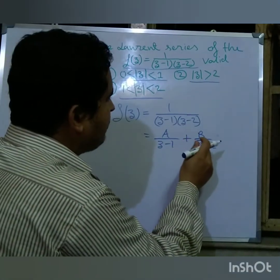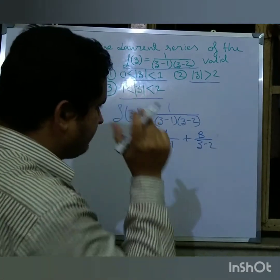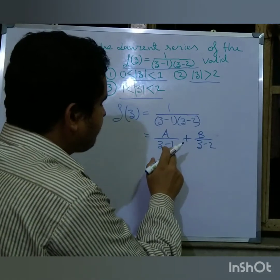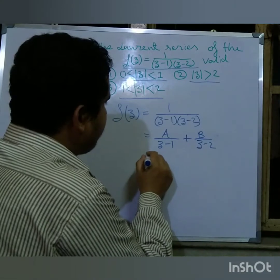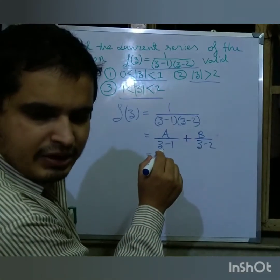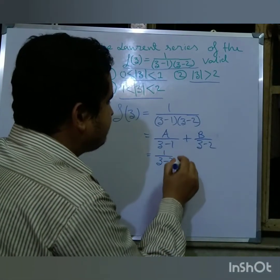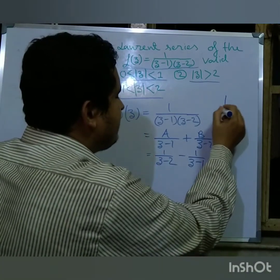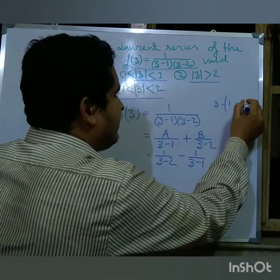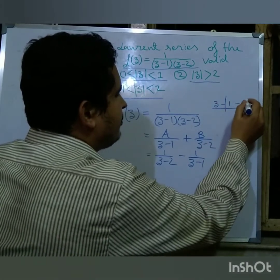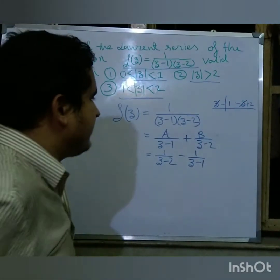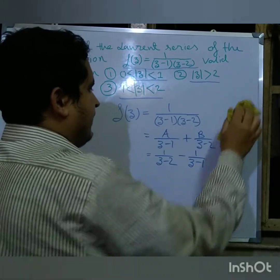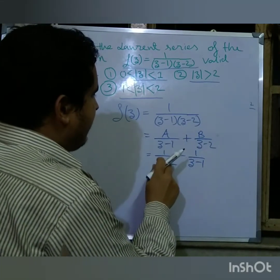To find A, put z equals 1, and to find B, put z equals 2 into the partial fraction expression. Substituting z equals 2 gives (z minus 1) evaluated at z equals 2, so we get z minus 1 minus (z minus 2), which simplifies: minus z plus 2 cancels and we get 1. So A equals minus 1 and B equals 1. This is the total partial fraction.